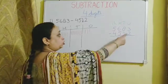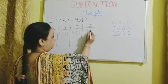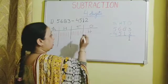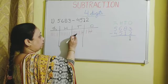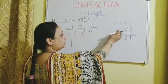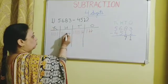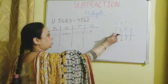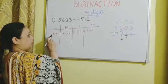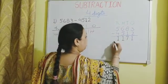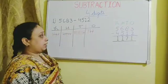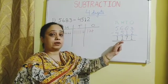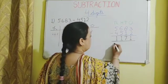Now we take away 2 ones from 3 ones — remaining is 1. From 8 tens we take away 1 ten — remaining are 7 tens. From 6 hundreds we take away 5 hundreds — remaining is 1 hundred. From 5 thousands we take away 4 thousands — remaining is 1 thousand. So if we take away 4512 from 5683, the result is 1171. The result of subtraction is known as the difference.